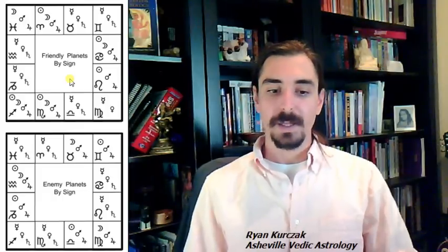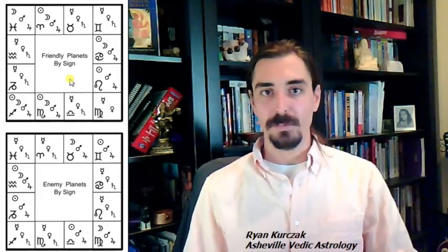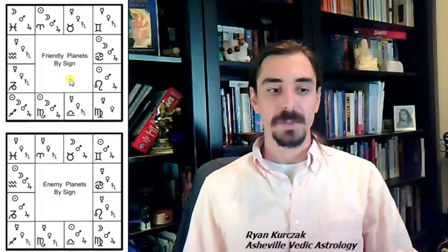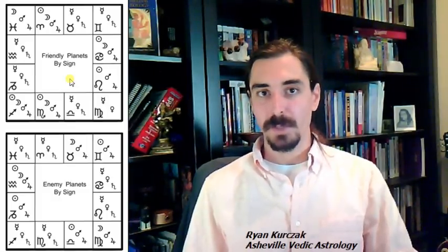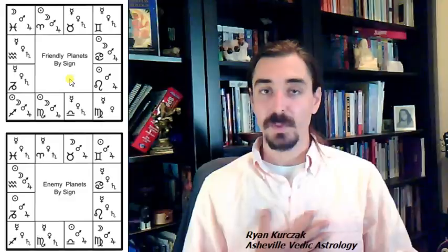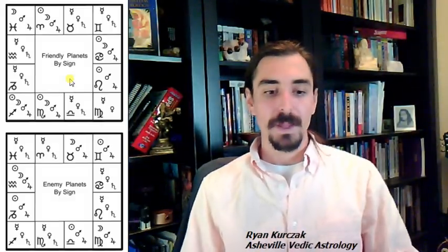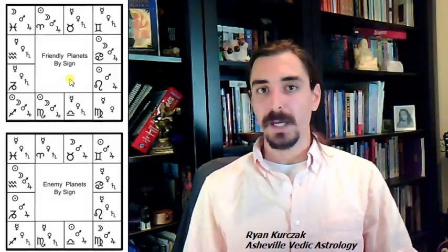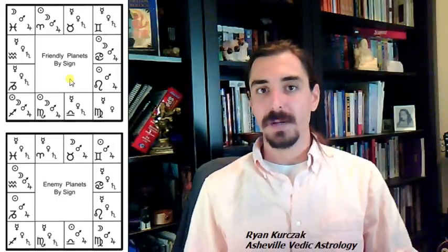Now the sun, since it is our indicator of self for everyone, it's still considered a malefic, but in my experience, less so, because it does represent us and our soul nature. It depends on the house that it rules, too. But the sun, I would consider that more of a minor malefic. The more intense malefics are Rahu, Ketu, Saturn, and Mars.